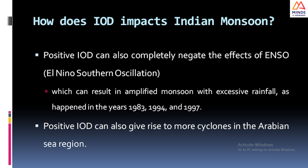The positive IOD also completely negated the effect of ENSO — El Niño Southern Oscillation — which further amplified the monsoon and resulted in extreme amounts of rainfall. There have been years where we have seen excess rainfall because of this. Additionally, positive IOD can give rise to more cyclones, since positive IOD is a low pressure condition in the Horn of Africa or the western Indian Ocean, which also creates the conditions for tropical cyclones in the Indian Ocean.